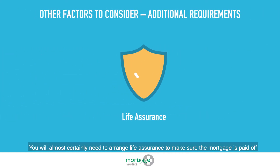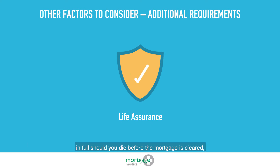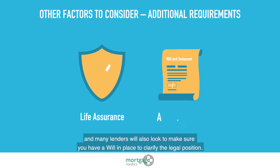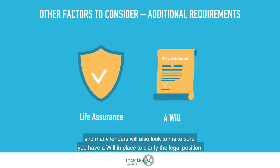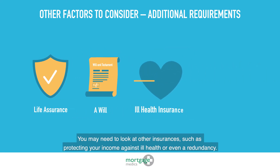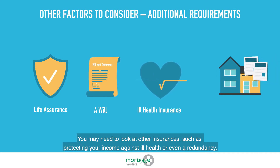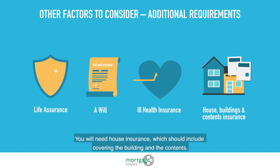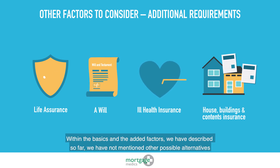You will almost certainly need to arrange life assurance to make sure the mortgage is paid off in full should you die before the mortgage is cleared. Many lenders will also look to make sure you have a will in place to clarify the legal position. You may also need to look at other insurances, such as protecting your income against ill health or even redundancy.